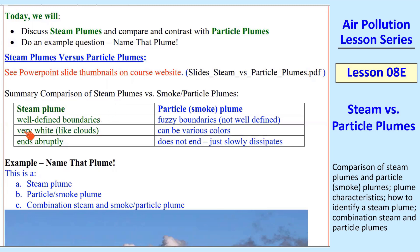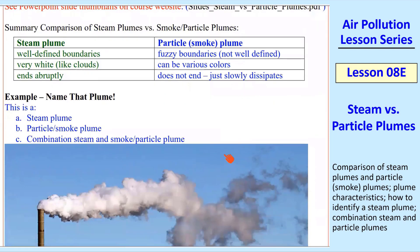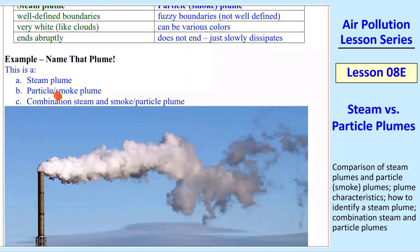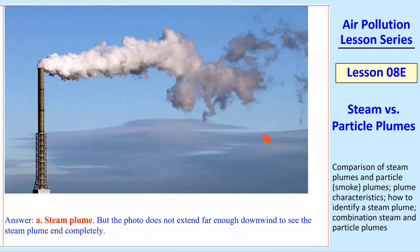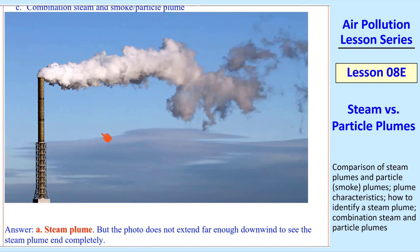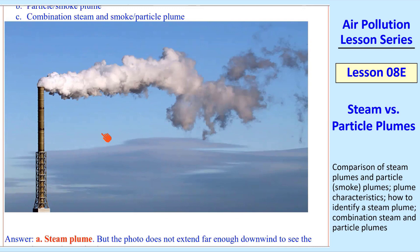Steam plumes have well-defined boundaries, they're white like clouds, and they end abruptly. Particle or smoke plumes — those mean the same thing — have fuzzy boundaries, they're not well-defined, they can be various colors, and a particle plume does not end, it just slowly dissipates. As an example, we can see well-defined boundaries, the plume is white, and it ends — this is obviously a steam plume, and you should be able to recognize this after watching the presentation.